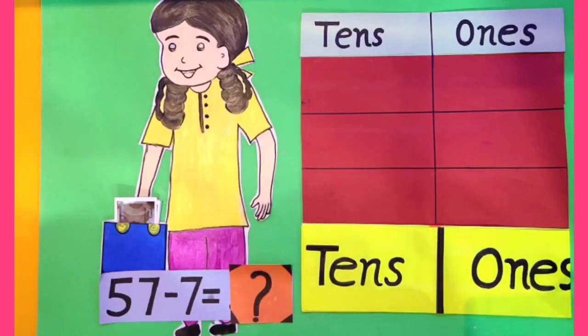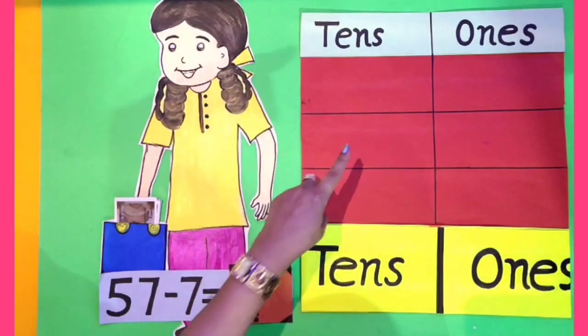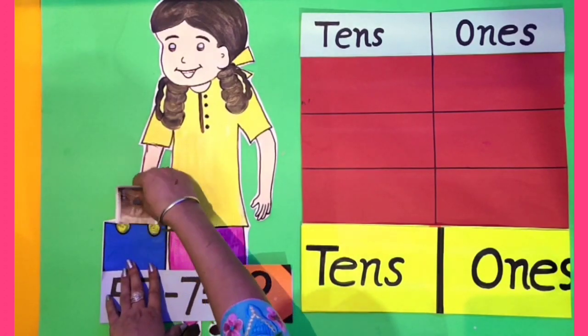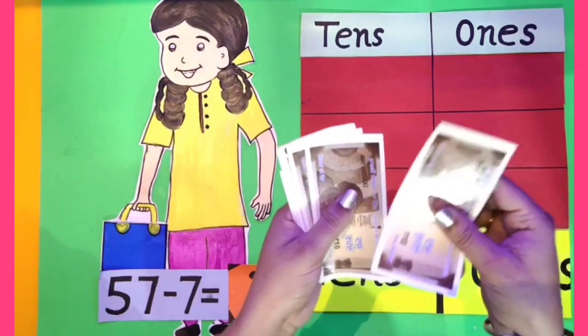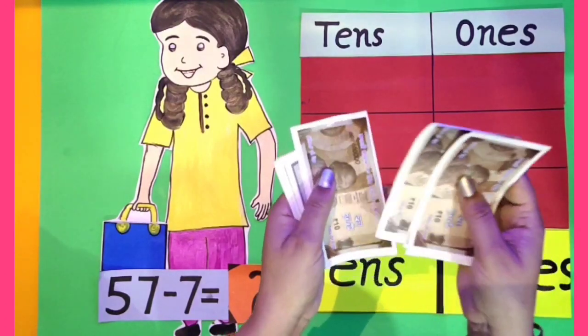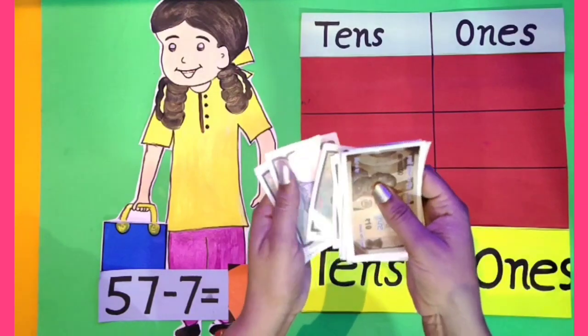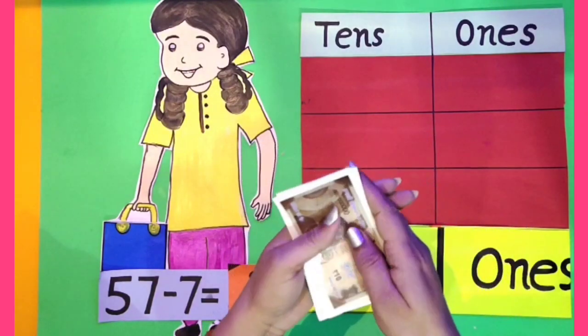Dear students, now we will solve this sum with another method. Now we all know that Arpan has 57 rupees in her purse. Let's count 10, 20, 30, 40, 50, 51, 52, 53, 54, 55, 56, 57.